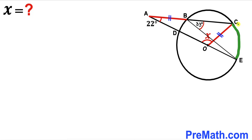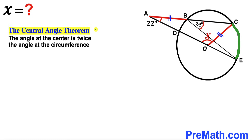Now let's focus on arc CE, which subtends two angles: angle CBE at the circumference and angle EOC at the center. Recalling the central angle theorem again, the angle at the center is twice the angle at the circumference. We know the angle at the circumference is 33 degrees, so angle EOC at the center is twice that, which is 66 degrees.